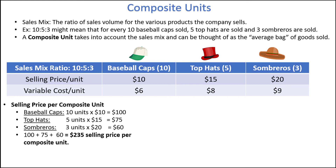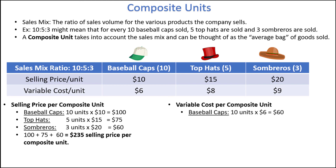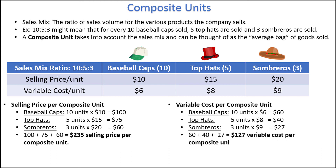We can use the same process to find the variable cost per composite unit. For baseball caps, again we take the 10 caps in a composite unit, but instead of looking at the $10 selling price, we look at the $6 variable costs. 10 units times $6 in variable costs gives us $60. Using the same process for top hats and sombreros, we get $40 and $27. The total variable cost per composite unit is 60 plus 40 plus 27 equals $127.